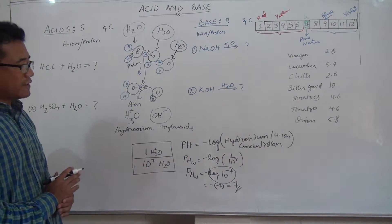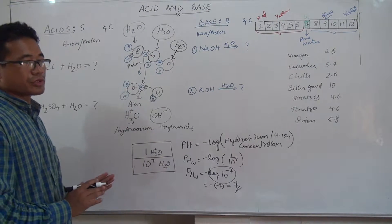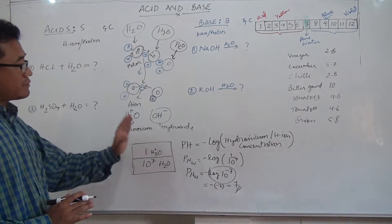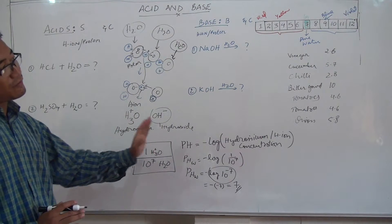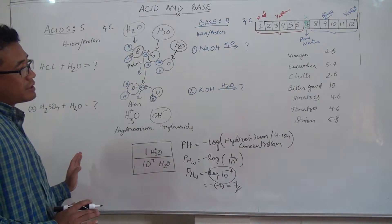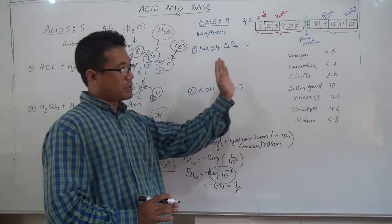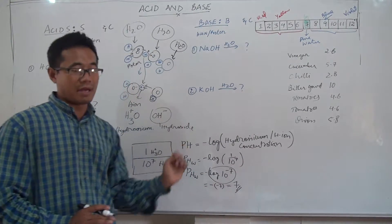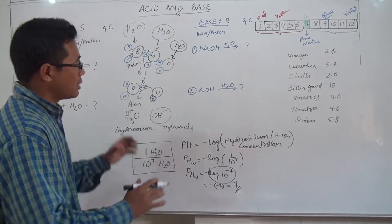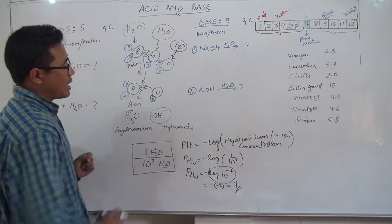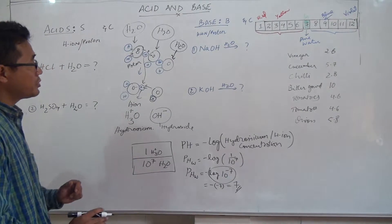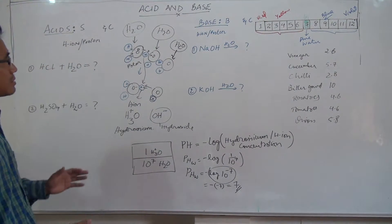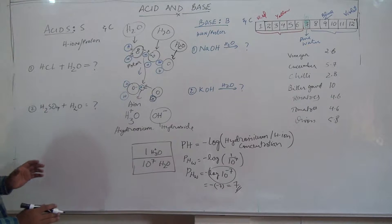A pH of 7 is taken as neutral by scientists. If the pH value of a material is less than 7, it is an acid; if the pH value is more than 7, it is a base. That is how the acid and base scale works.